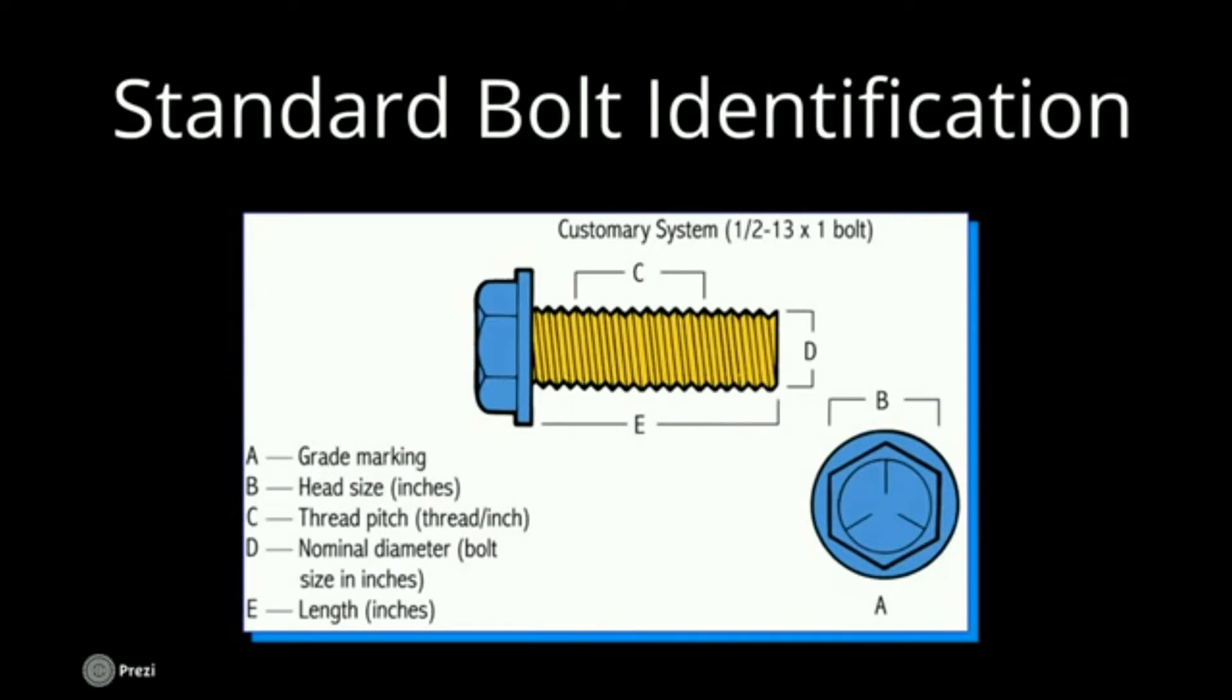Let's look at this picture now. If you look at A, you can see the grade markings, and the grade marking tells you the strength of the bolt. You'll see those three little dashes there. That indicates that it is a grade 5 bolt. You add two to the number of dashes.